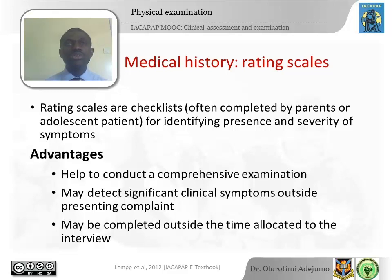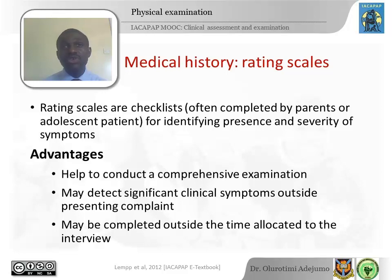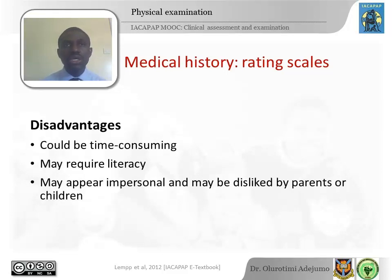Rating scales are essentially checklists that you can give to an older child, adolescent, or caregiver to help indicate a wide variety of possible problems. The advantages are that they help you conduct a comprehensive examination so you don't forget important things, and they may reveal clinical symptoms the parents might not have volunteered. They can also be completed outside of the interview session. Disadvantages include that they can take up a lot of time, require literacy, and may feel impersonal — so some adolescents or families might not like them.